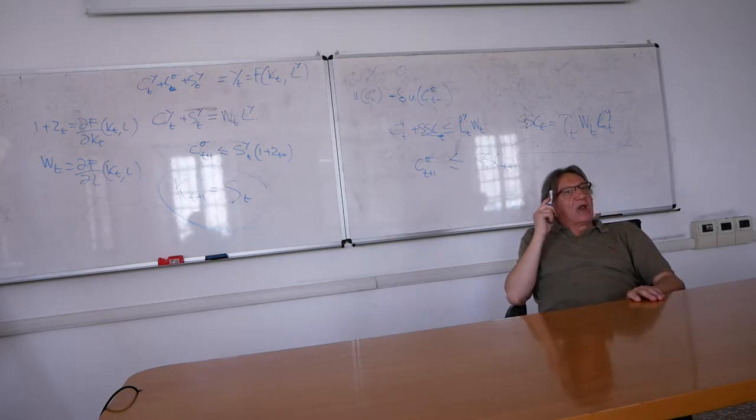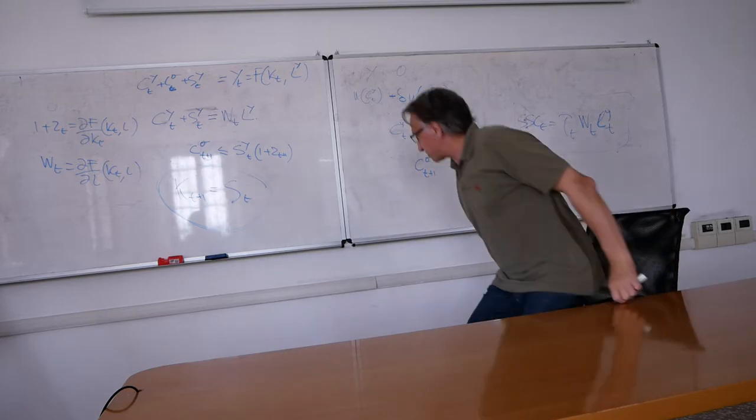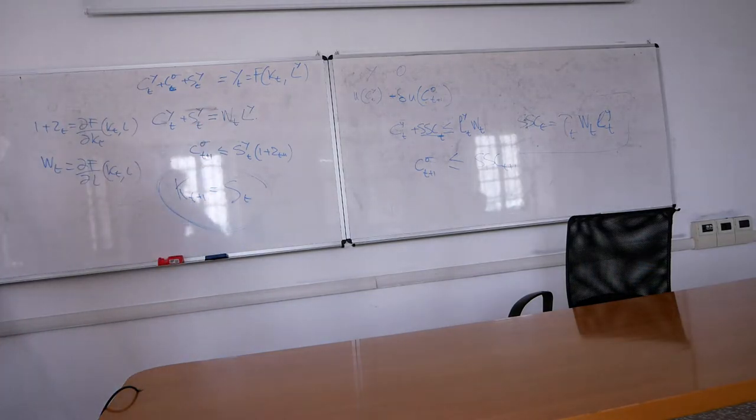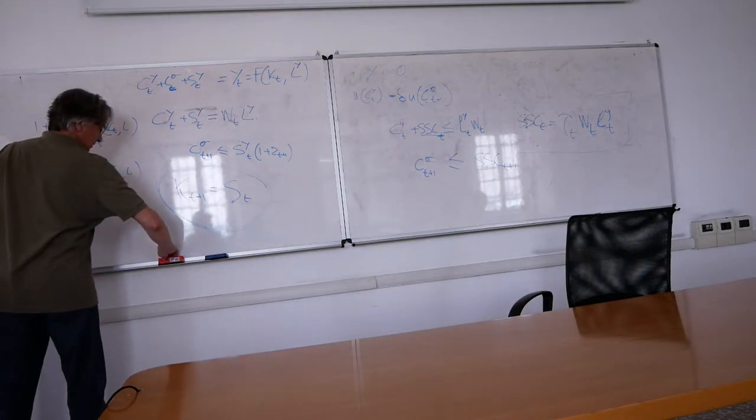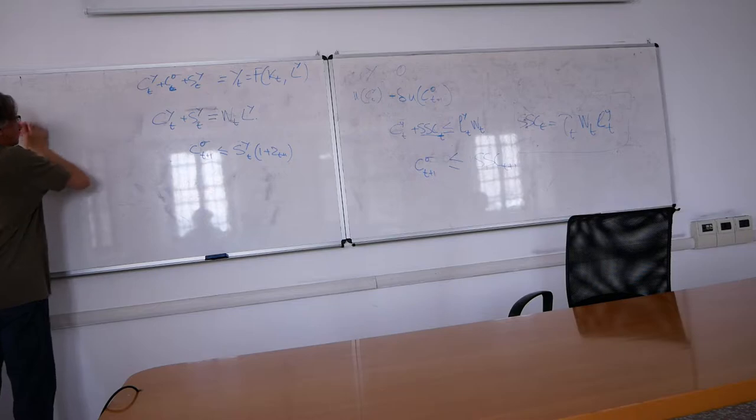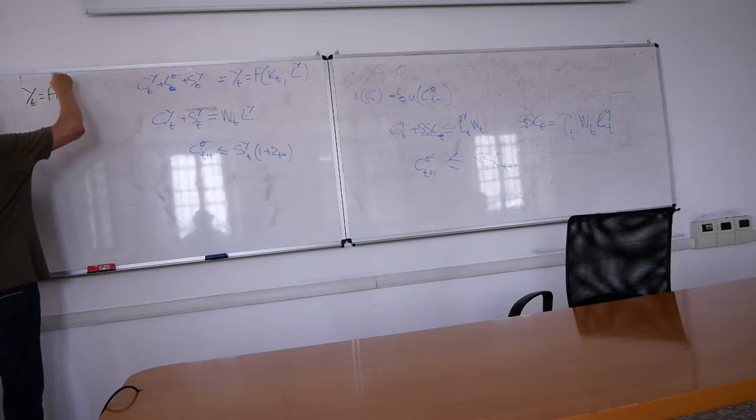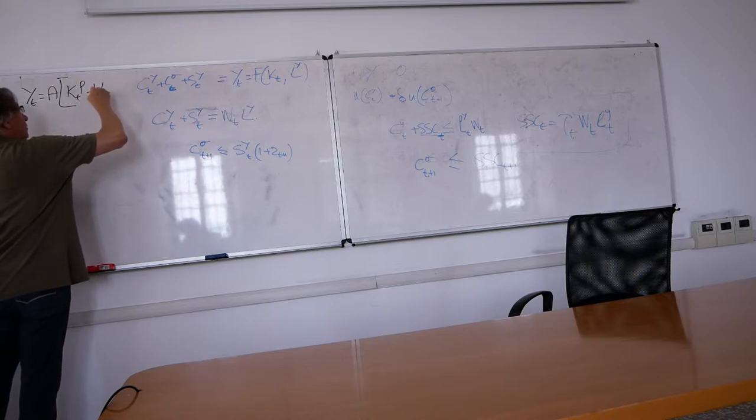This is how that model works. Imagine the production function is one of those in which growth is possible - not technological change, but growth is possible. Let's write it just so we keep it in mind. One of those production functions in which... I can take this away. So in that production function, yt is (kt^ρ + BL)^(1/ρ), with ρ larger than zero and a quite large.